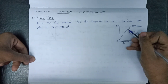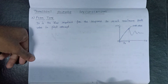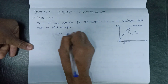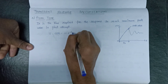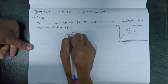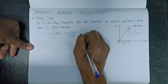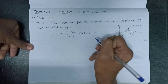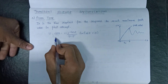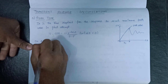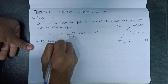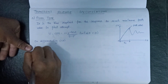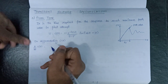Since we have derived the value of c(t) equals to 1 minus e to the power minus delta·omega_n·t divided by under the root of 1 minus delta squared, multiplied by sine of (omega_d·t plus theta). On differentiating the value of c(t), we get d/dt of c(t).